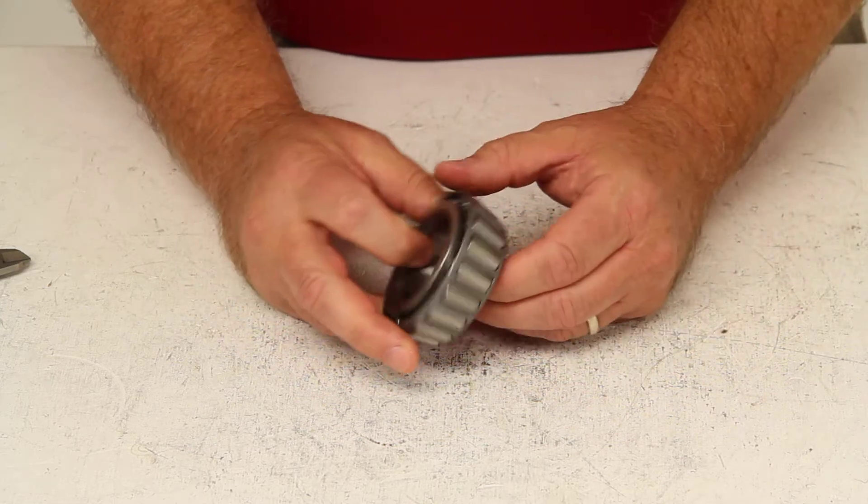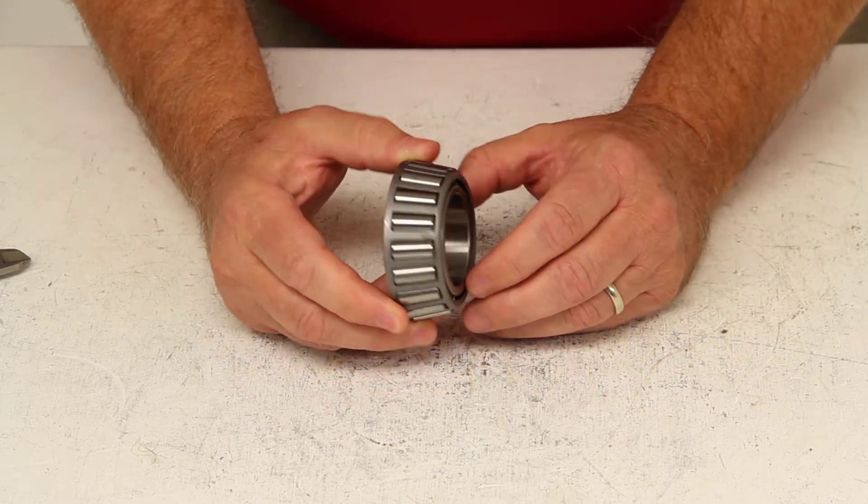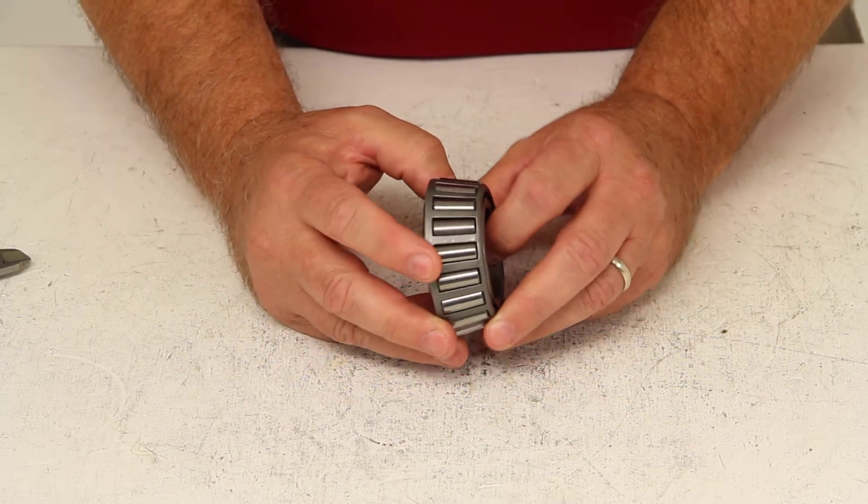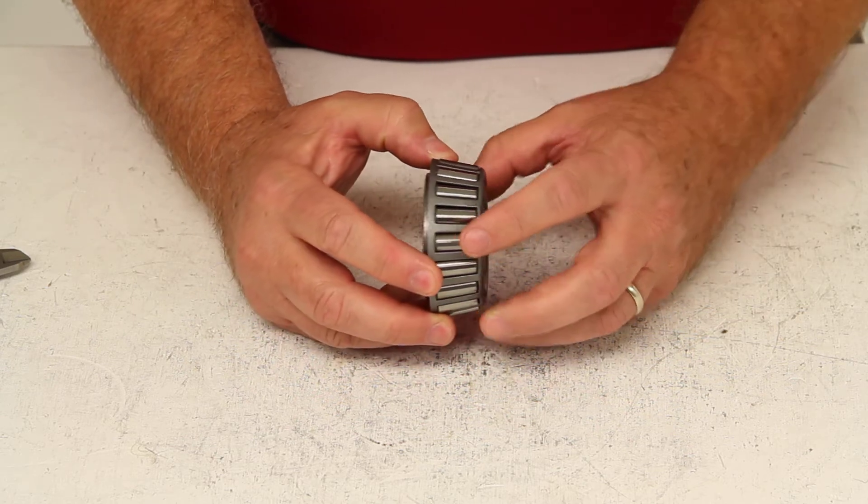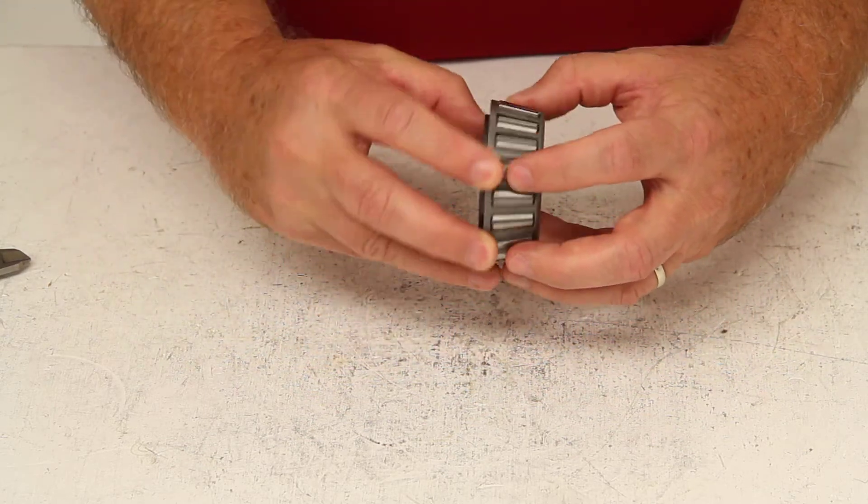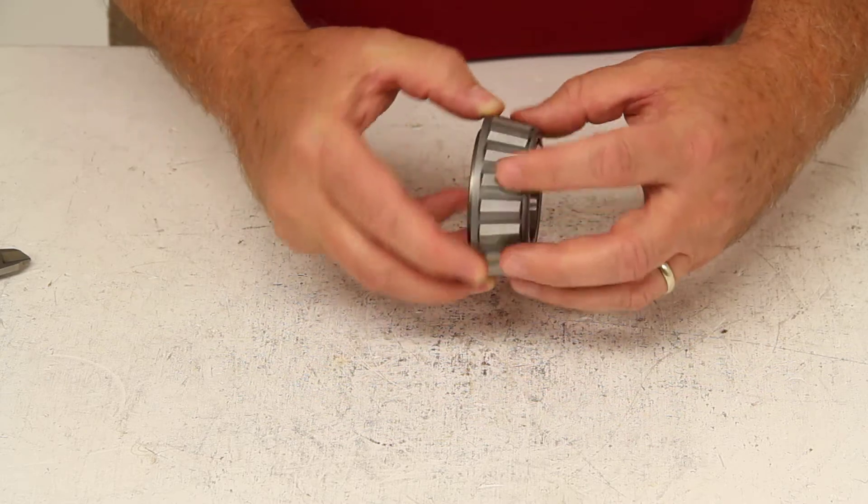There is one other piece that is required with the bearing, and that is the bearing race. That is sold separately, but the bearing race would be the part that would install into the hub that would allow the bearing to ride, sit into, and the bearings would ride on that race.